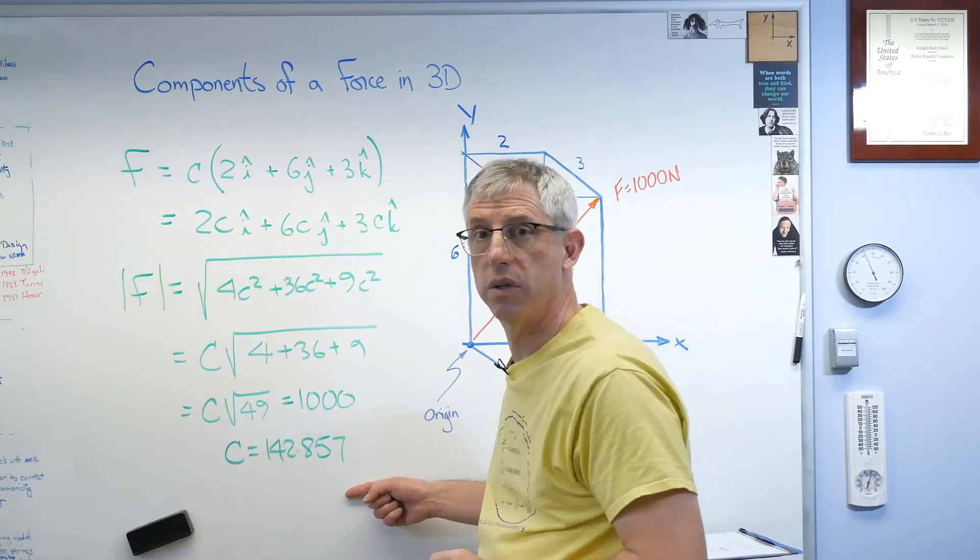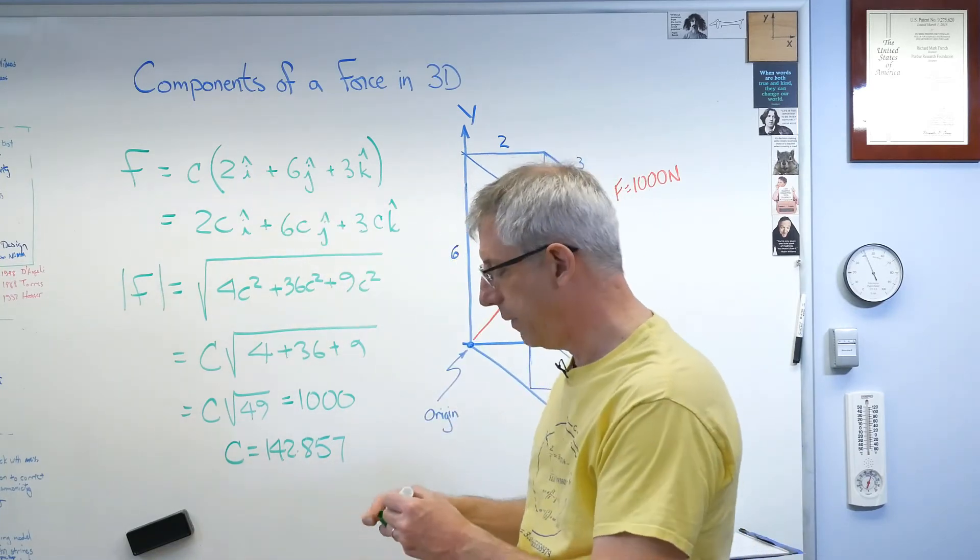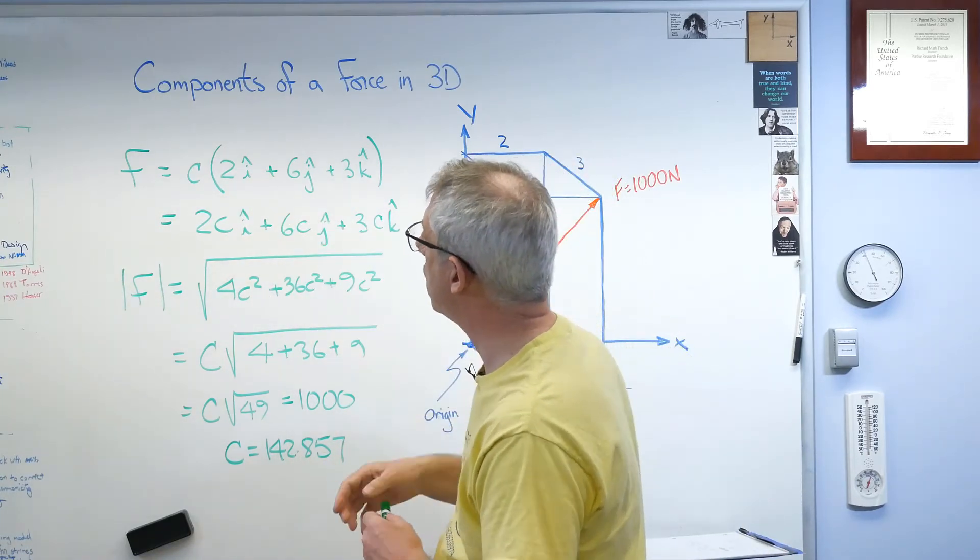142.857. Let's make sure you can see that. You can see that. So 142.857. That's what c is.